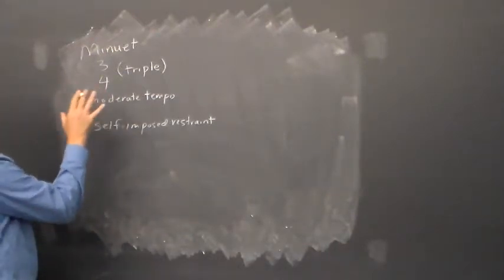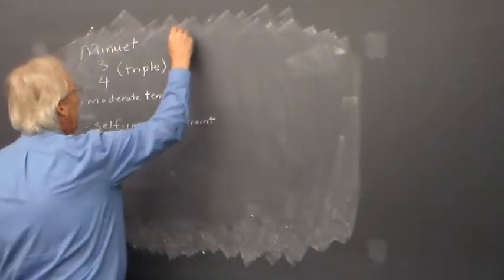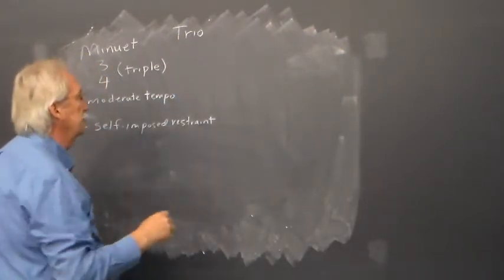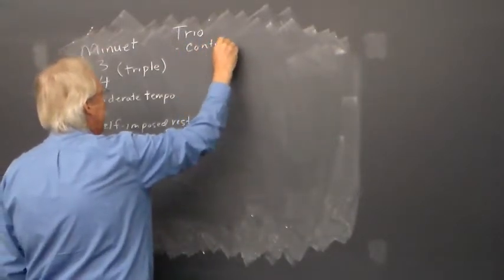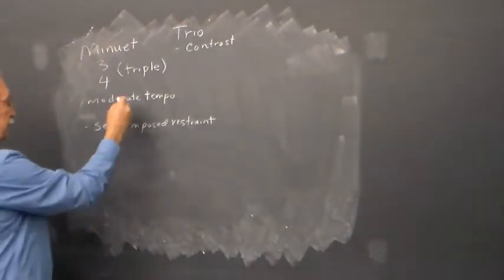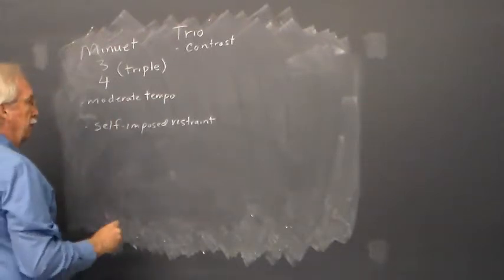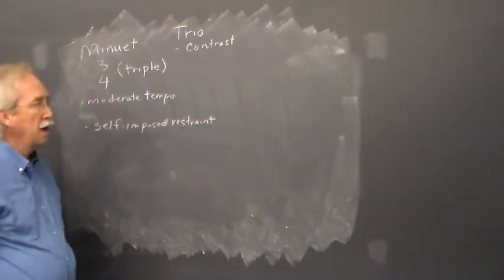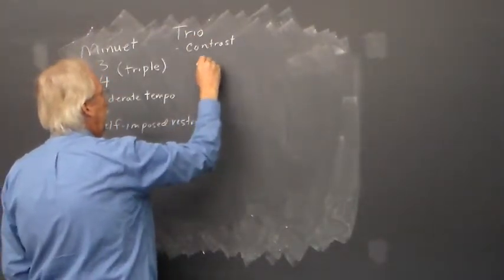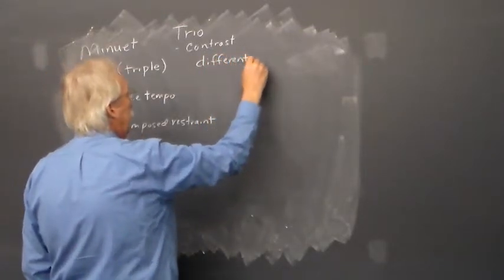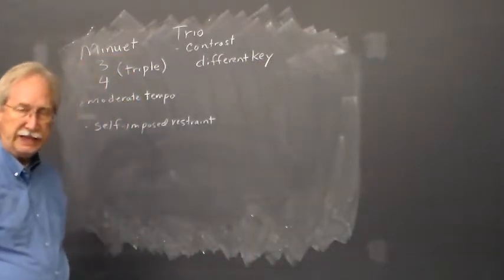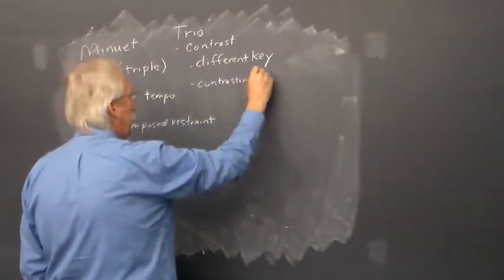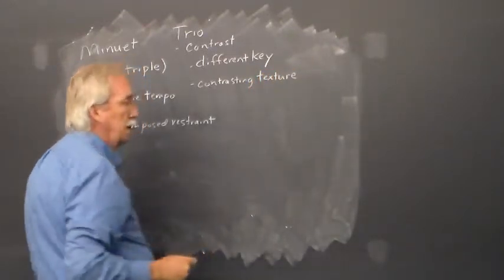The minuet would be coupled with a trio section that forms a sense of contrast. It has the same triple meter, the same moderate tempo, the same idea of self-imposed restraint. So it doesn't have contrast with those basic qualities of the minuet, but you expect the trio to be in a different key with a contrasting texture.